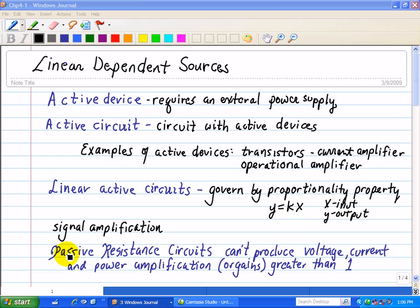On the other hand, passive resistance circuits don't produce voltage, current, or power amplification, or gains greater than one. Only when you supply power to an active device will you get a gain greater than one.